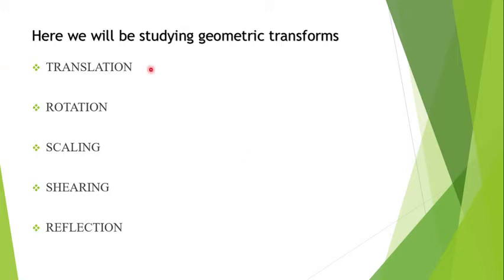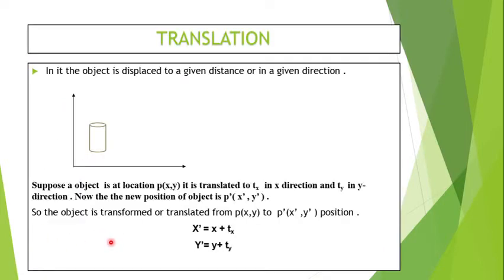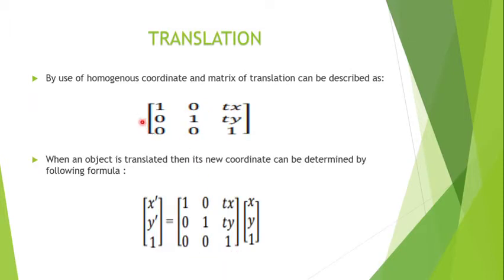Translation: when an object is displaced from one position to another, it is called translation. Suppose an object is at point P. When it is translated by some translation factor Tx and Ty, where Tx is the translation factor for x coordinate and Ty is the translation factor for y coordinate, it reaches point P'. The coordinates x' and y' for point P' are obtained by: x' = x + Tx, y' = y + Ty. This is the homogeneous matrix of translation, and the new coordinate can be determined by the following formula.